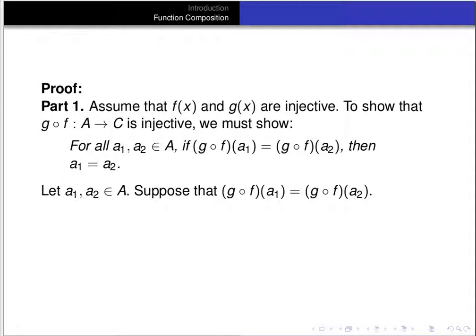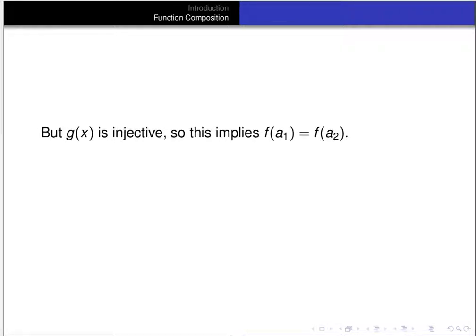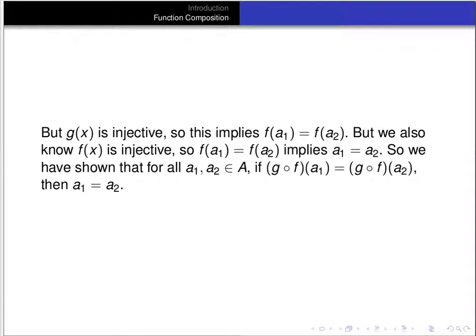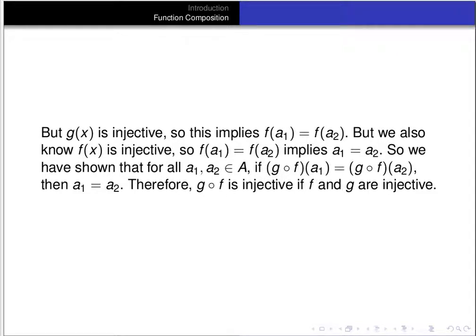For Part 1, assume f and g are injective. Let a₁ and a₂ be elements of A, and suppose g ∘ f(a₁) = g ∘ f(a₂). By definition of composition, that means g(f(a₁)) = g(f(a₂)). Since g is injective, this implies f(a₁) = f(a₂). Since f is also injective, f(a₁) = f(a₂) implies a₁ = a₂. Therefore g ∘ f is injective when f and g are injective.